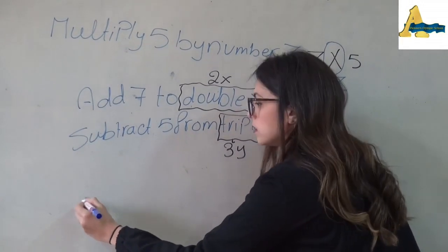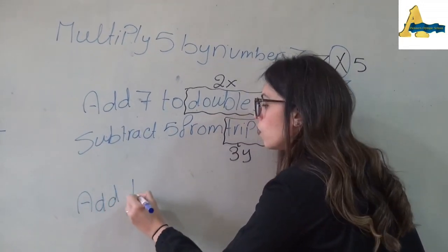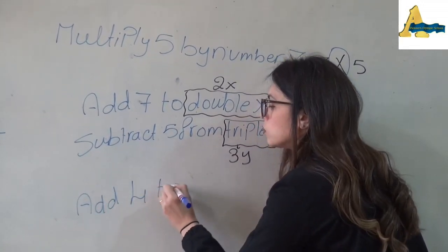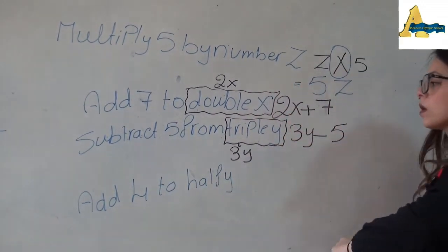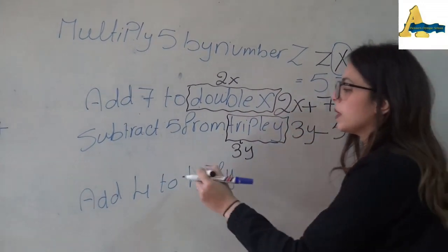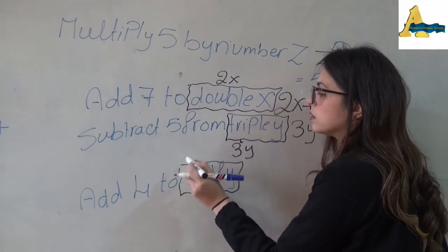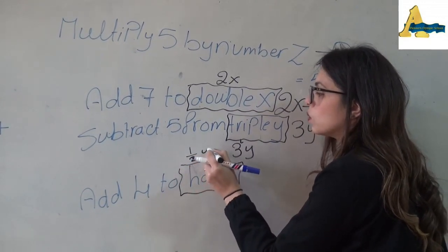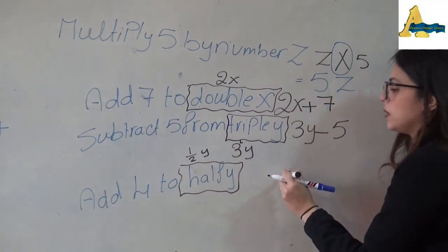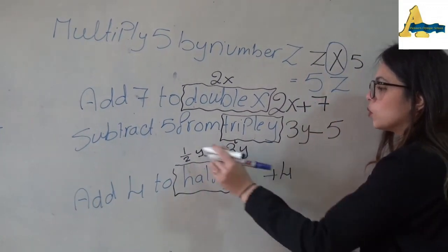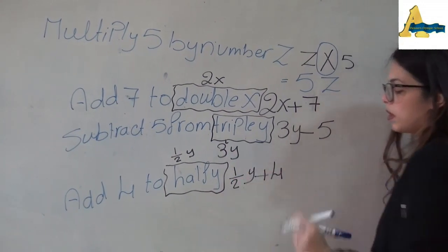If he said 'add 4 to half y': what is the meaning of half y? This means ½y. He said add 4 — that means plus 4 — to half y. So the expression is ½y + 4.